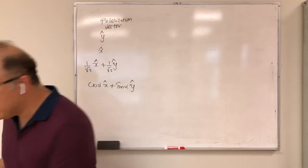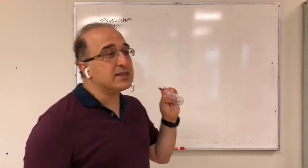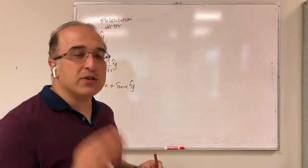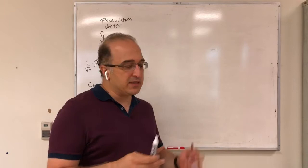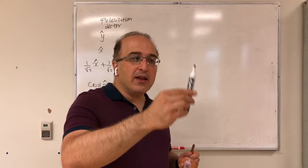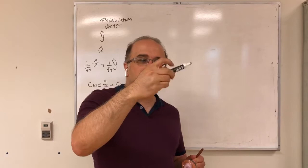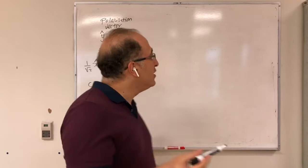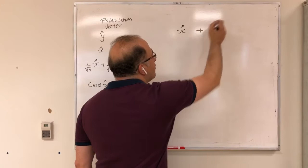Now, for a circularly polarized antenna — this is an example, and you'll see it in the lab videos — for circular polarization, we need both components of the electric field. It's not going to be like linear polarization with just one component; you have to have the perpendicular component as well, because the field is going to rotate like a circle. So you get x-hat and also y-hat.